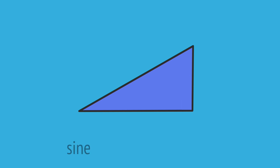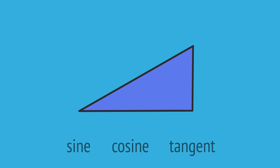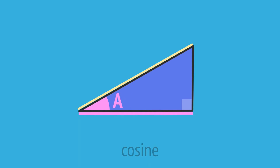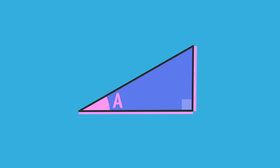Trig functions like sine, cosine, and tangent are relationships between the angles and sides in a right-angled triangle. A trig function relates the size of an angle to a particular ratio of side lengths. Each function uses a different pair of sides.